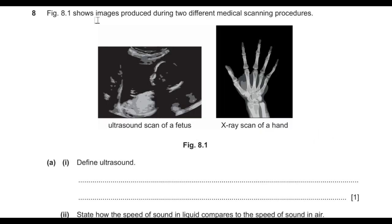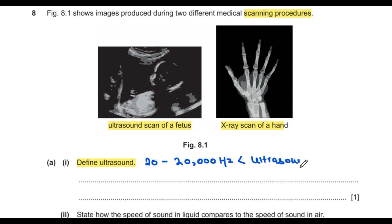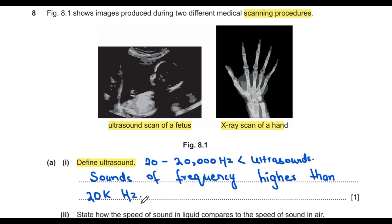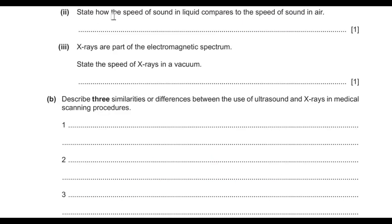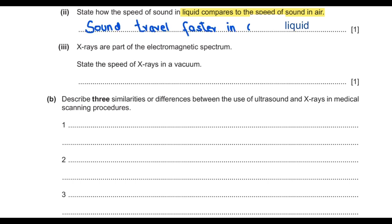Question 8 says figure 8.1 shows images produced during different medical scanning procedures: ultrasound and X-rays. The first question asks to define ultrasound. A normal human can hear sound in the frequency range of 20 to 20,000 hertz. Any sound with a frequency greater than 20,000 hertz is not audible and is considered ultrasound. The second question asks how the speed of sound in liquid compares to that in air: sound travels faster in liquid than in air.